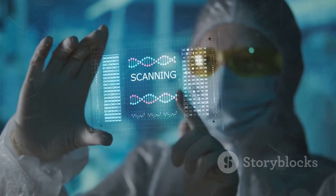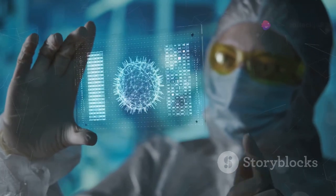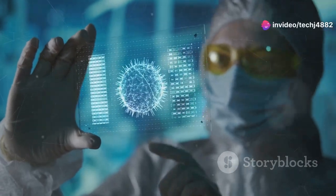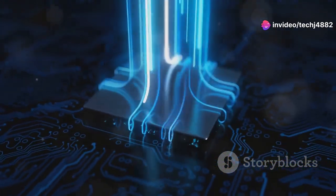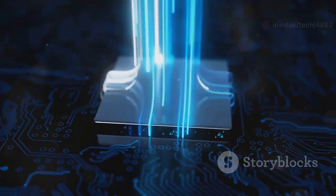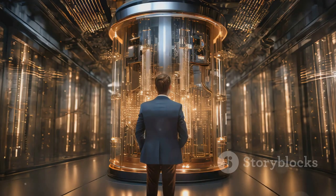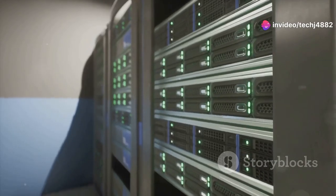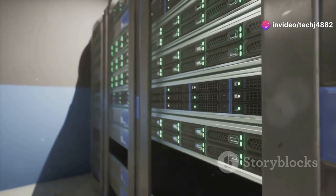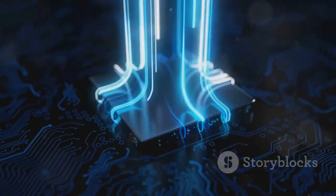Traditional computers rely on bits. Instead of bits, which are either zero or one, quantum computers use qubits, which can be both zero and one at the same time. This is called superposition, one of the key principles that make quantum computing so powerful. Thanks to quantum mechanics, these computers can perform calculations at speeds that would make a supercomputer look like a pocket calculator.